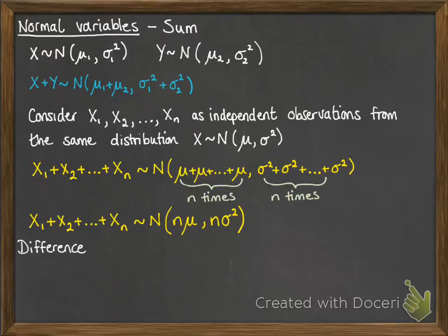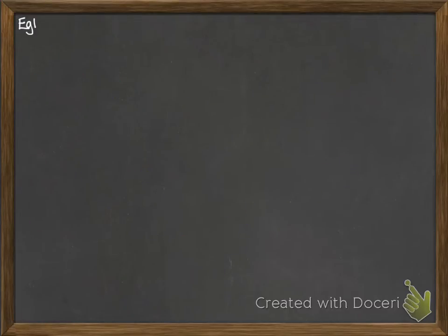Now if you're thinking about the difference, if you did X minus Y instead of X plus Y, you would get that it follows a normal distribution. You would do the first mean minus the second mean. But then your variances would be added together. Remember with variance, it's a positive measure all the time. So you're going to add those two together. You won't subtract them. So let's have a look at some examples.